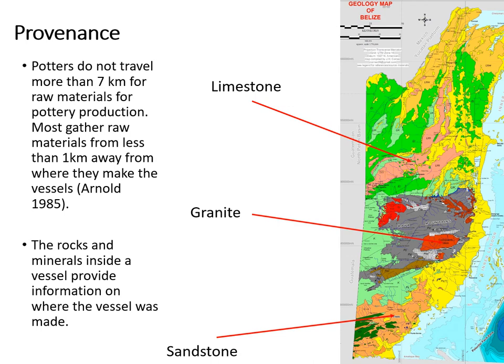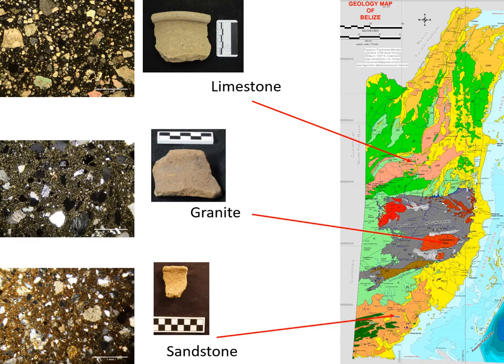Because potters generally do not travel far for raw materials, the rock and mineral inclusions in the vessel provide important information on where the ceramic vessel was produced. This image shows different geologic regions of Belize. The green areas are limestone, the red and gray areas in the center are granites and quartzites, and the orange at the bottom is calcareous sandstone. The difference in these three broad geologic zones is very evident under the microscope. The top thin section shows a limestone tempered pot, the middle shows a granite tempered pot, and the bottom slide shows a calcareous limestone tempered vessel. You can also see that the pottery produced using these different raw materials looks different macroscopically as well.